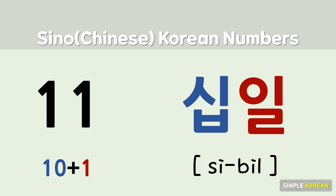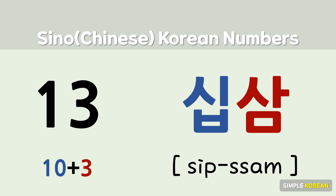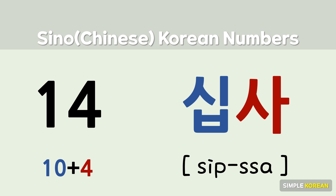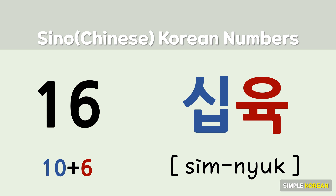11, 12, 13, 14, 15. 16 is pronounced differently due to the following vowel. The numbers ending with 6 — 26, 36 to 96 — are all the same case. 16.